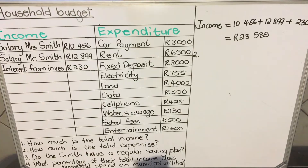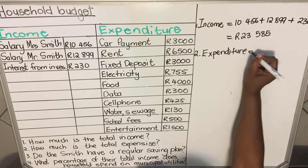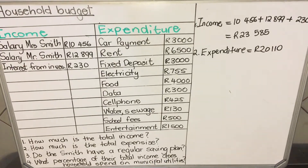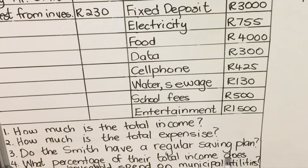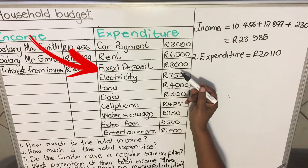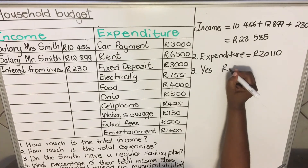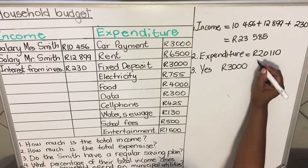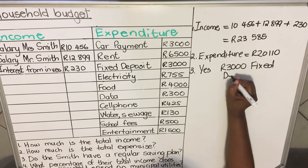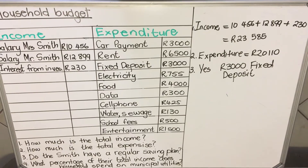You also need to budget for entertainment. Their total expenses are 20,110. The next question is: do the Smiths have a regular savings plan? Looking at their expenditures, there is a fixed deposit of 3,000 — yes, they do have a regular savings plan. They save 3,000 every month by depositing it into their account so that when they have problems they can use that amount.